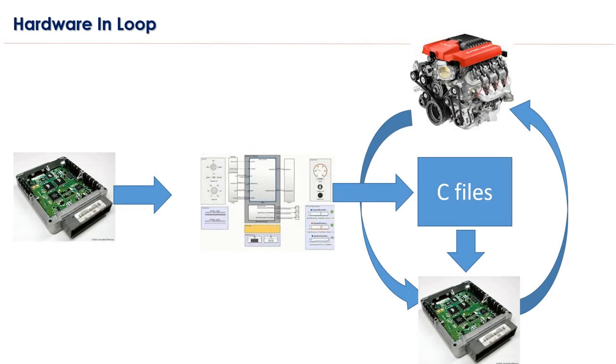The 'loop' means that along with the ECU we have a simulation setup, and by using that simulation setup we are going to test the hardware — which is our ECU. In this HIL setup, the ECU is in loop with the engine, where the engine is our plant. This plant is most of the time modeled in simulation software like MATLAB Simulink, ETAS INCA, or many other simulation tools.